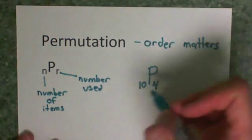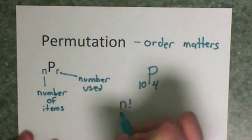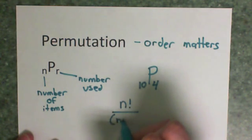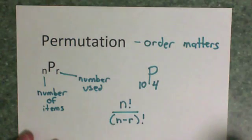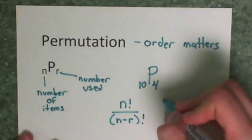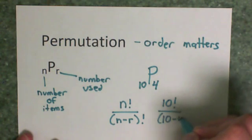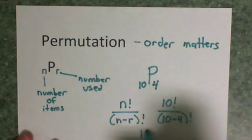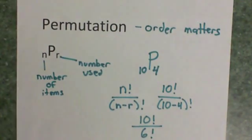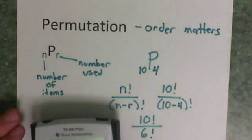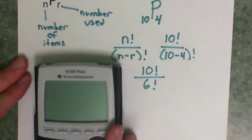Now if you were to do it by hand, the formula is going to be N factorial over (N minus R) factorial. So for the numbers that I have right here, that would be ten factorial over ten minus four factorial, which is the same on the bottom as saying six factorial.